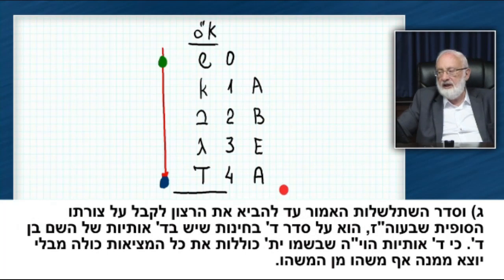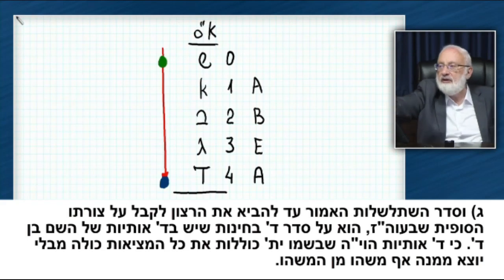So it says, the above mentioned order of cascading which brings the will to receive to its final form in this world. Here, the will to receive reaches its final form, which is only reception. Here, the lowest level of the world of Asiyah is called this world. So what is this order? Here, it follows a sequence of four Pchinot that exists in the four-letter name, Yud-K-Vav-K.